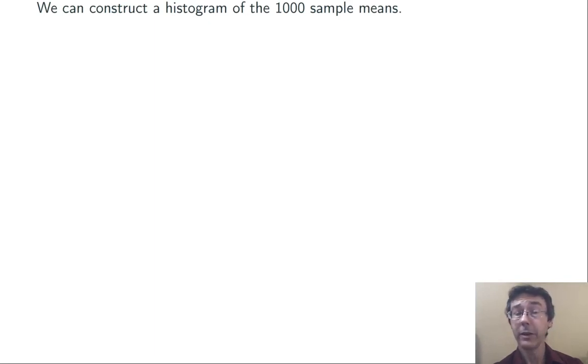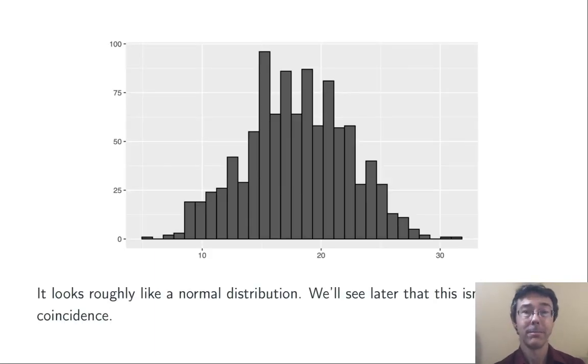Once we have those 1,000 sample means, we can describe the sampling distribution by, for example, making a histogram. So, here we are. In this case, it looks roughly like a bell curve, and we'll see in a future video that this isn't a coincidence.